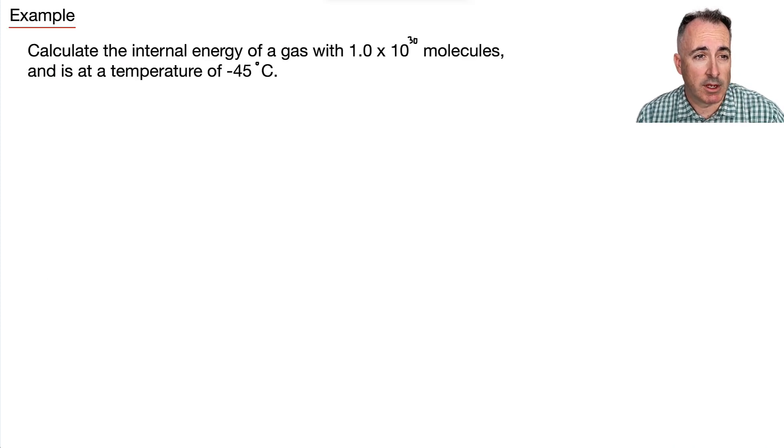So let's do an example. We're going to calculate the internal energy. Remember, that means we want to find U. We want U of a gas with this many molecules. And remember what that number is. This right here then must be, if there's a number of molecules, it must be capital N, at a temperature of minus 45 Celsius.